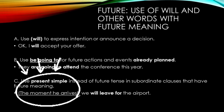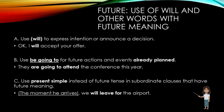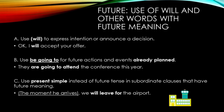C: Use present simple instead of future tense in subordinate clauses that have future meaning. Gunakan present simple, bukan future, untuk anak kalimat yang menerangkan kalimat future. The moment he arrives, we will leave for the airport — ketika dia tiba, kita akan berangkat ke airport. Klausa utama dalam kalimat ini adalah 'we will leave for the airport' — sebuah kalimat future. Klausa yang menerangkan adalah 'the moment he arrives', menggunakan present verb atau verb 1, bukan future verb.